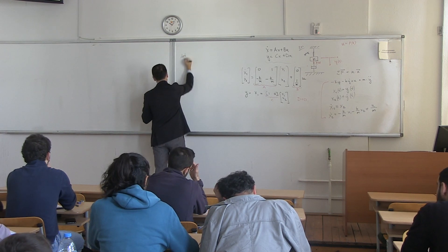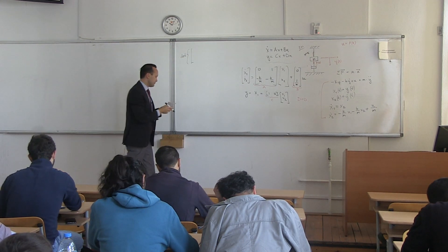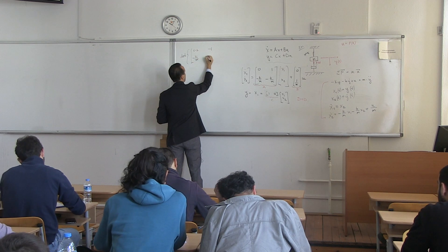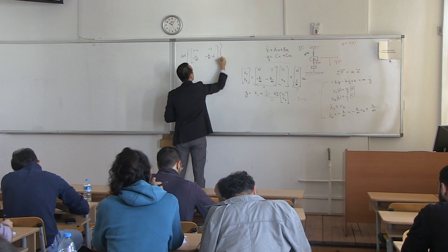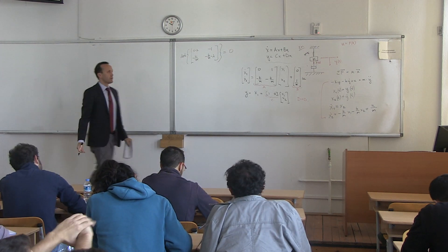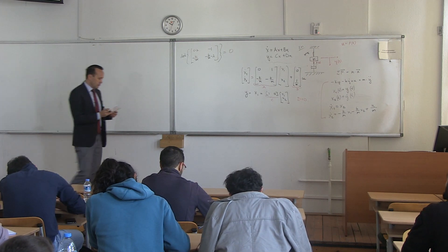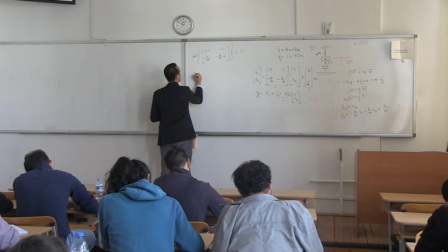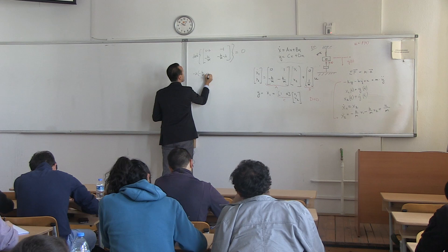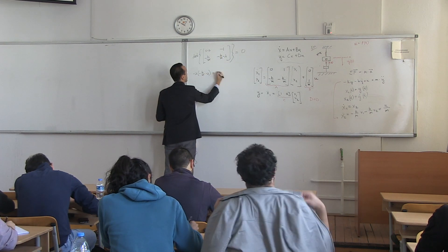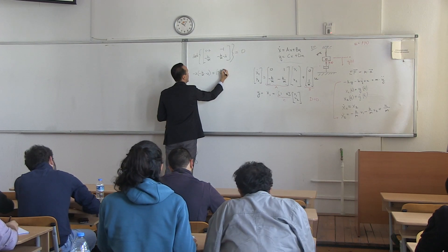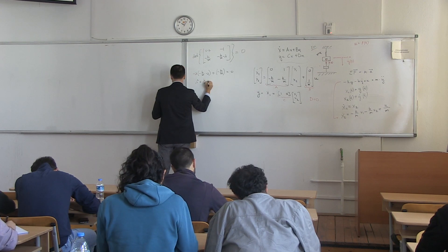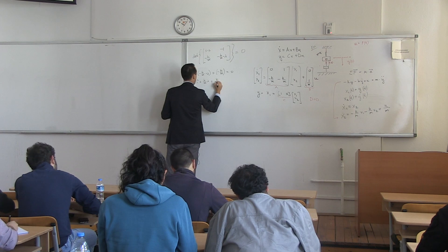To find the eigenvalues, we compute the determinant of (A − λI) = 0. Setting up the matrix: det([[−λ, 1],[−k/m, −b/m − λ]]) = 0. Expanding: (−λ)(−b/m − λ) − (1)(−k/m) = 0, giving λ² + (b/m)λ + k/m = 0.